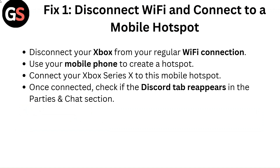Fix 1: Disconnect Wi-Fi and connect to a mobile hotspot. Disconnect your Xbox from your regular Wi-Fi connection. Use your mobile phone to create a hotspot and connect your Xbox Series X to it. Once connected, check if the Discord tab reappears in the Parties and Chat section.